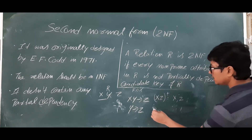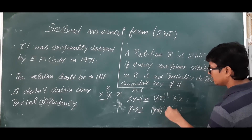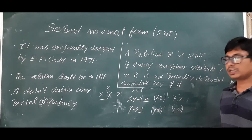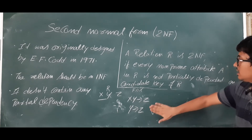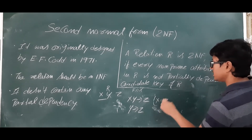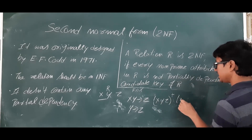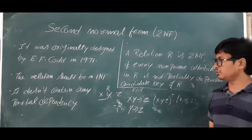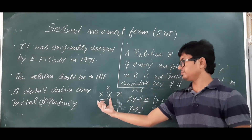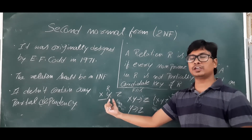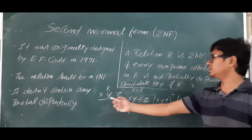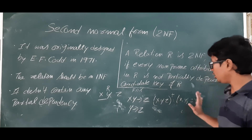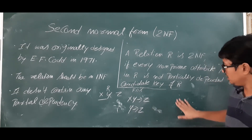XZ-closure gives only XZ, not Y, so XZ is not a candidate key. YZ-closure gives Y and Z but not X, so YZ is not a candidate key. For length three: XYZ-closure gives XYZ, but XYZ is not a candidate key — it is a super key, because XY is already a candidate key. Adding Z to XY gives a super key, not a candidate key. So XY is the candidate key for relation R.